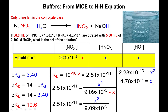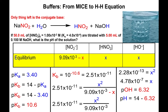Another common mistake: students get x and automatically take the negative log and call it the pH. But x does not correspond to the hydronium concentration — it corresponds to the hydroxide concentration. Taking the negative log gives you the pOH, not the pH. You need to subtract pOH from 14 to get the pH.